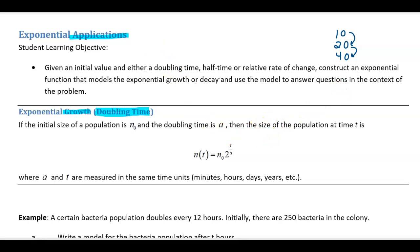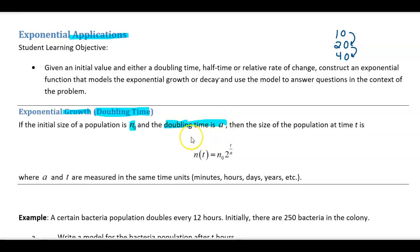When you have this situation, you can use this formula where n-sub-zero is your initial size of your population. The amount of time it takes to double is 'a'. So if it takes one week for a quantity to double, that would be your 'a' value, or if it takes 10 minutes, that's your 'a' value. Your time is your 't' variable, and 'a' and 't' must be measured in the same units.